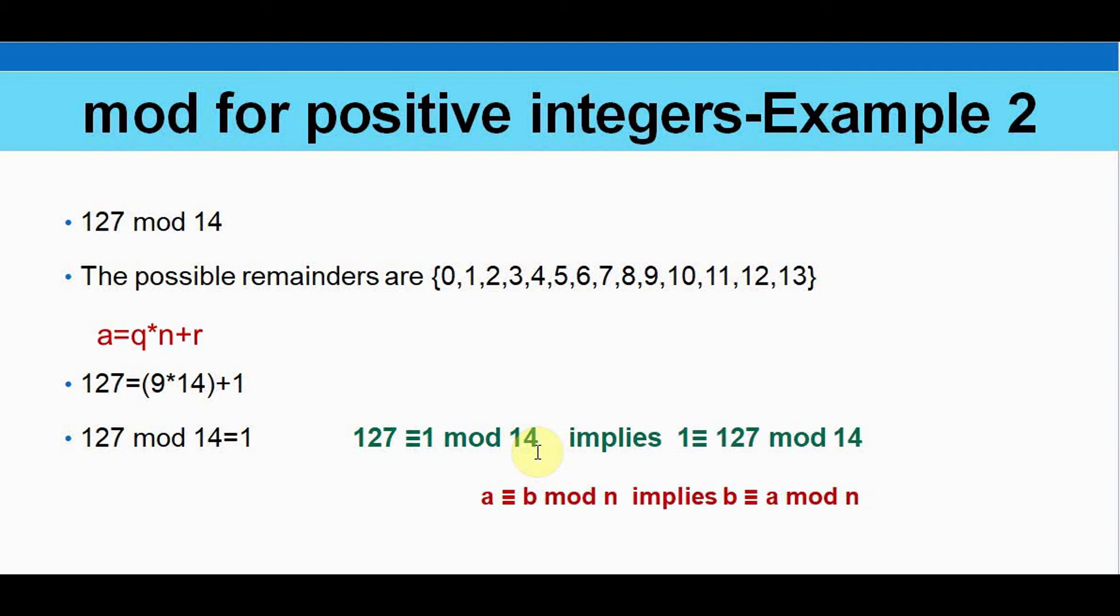And a congruent to b mod n means that b is congruent to a mod n. So you can write 127 congruent to 1 mod 14 can also be written as 1 congruent to 127 mod 14.